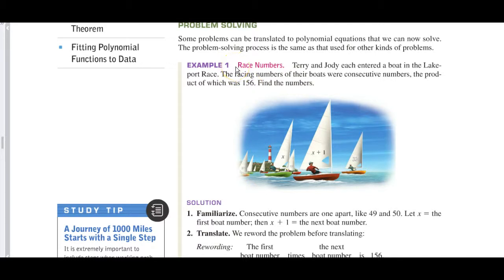Terry and Jody each entered a boat in the Lakeport race. The racing number of their boats were consecutive numbers, the product of which was 156. Find the numbers. Now, some of you might try to find this by using arithmetic, and that would be good. But on a test, you need to show the work that you got to the answer by doing, in this case, what will be a quadratic equation.